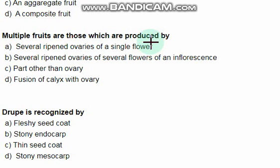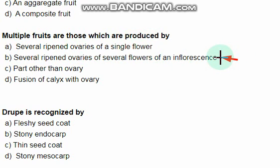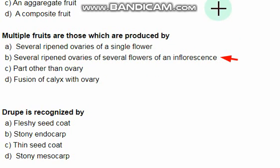Multiple fruits are those which are produced by — the right option is option B: several ripened ovaries of several flowers of an inflorescence.